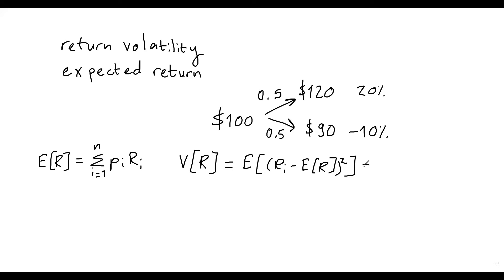Or, just to make it clearer again, we start from the first state, there are n states. We will use the probability in each state, but now we will have the return in state i minus the expected return E[R], squared.